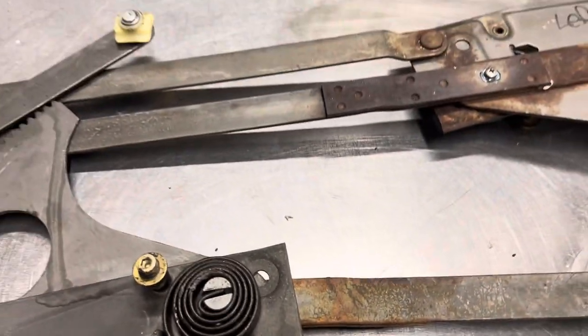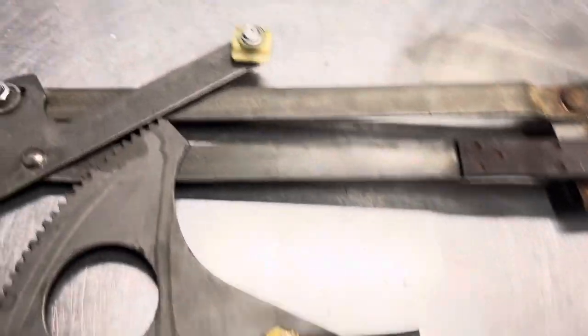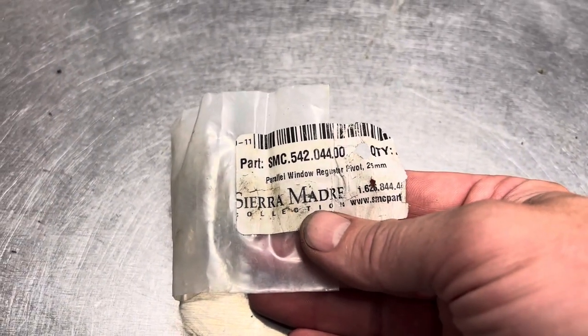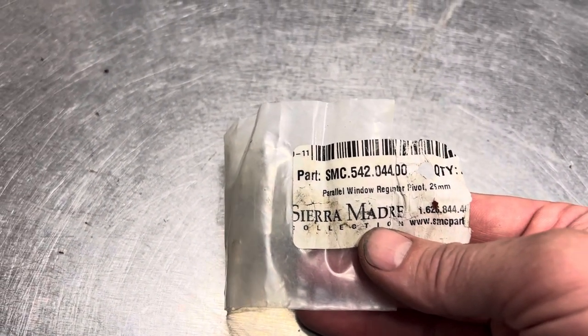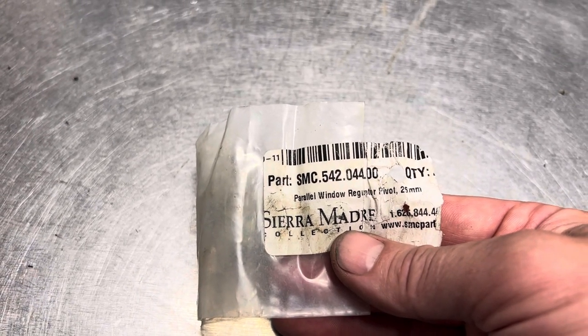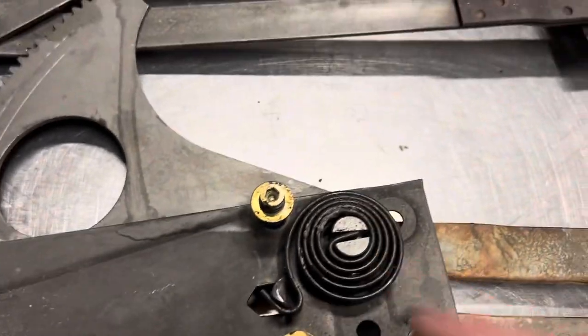That's because of the tension on the spring, and you can buy a part called a parallel window regulator pivot, 25 millimeter, which has an SMC part number of 542.044.00, and you can replace this piece.